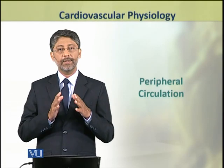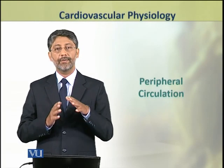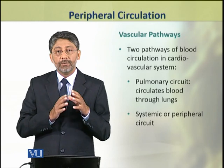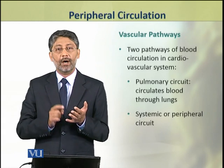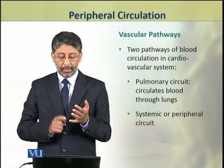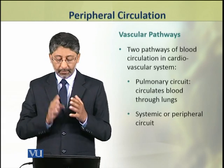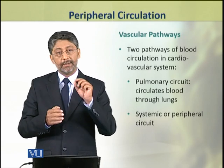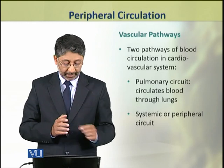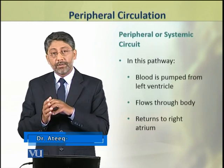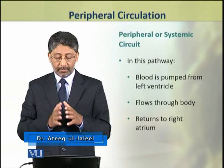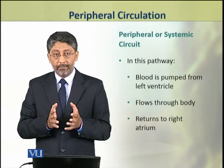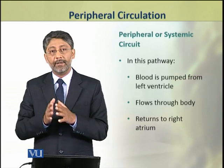Dear students, in this topic we shall discuss the peripheral circulation. In the cardiovascular system, there are two pathways of blood circulation: the pulmonary circuit, which circulates the blood through the lungs, and the systemic or peripheral circuit, in which blood is pumped from the left ventricle, flows through the body, and returns to the right atrium.